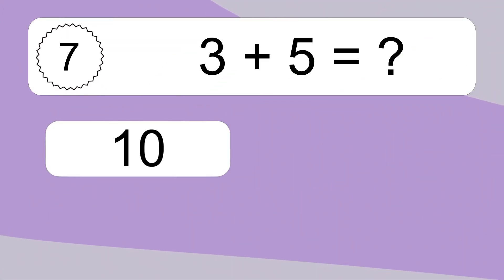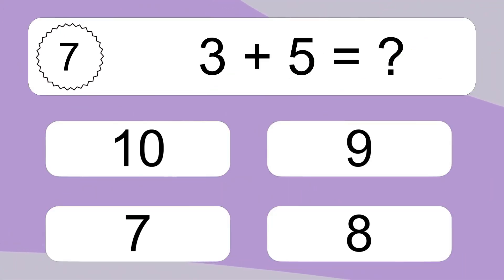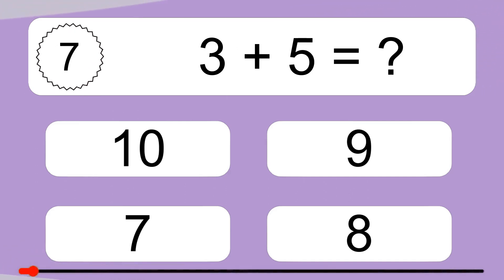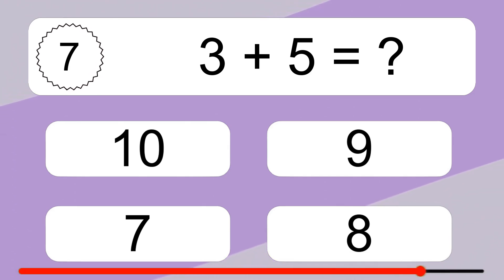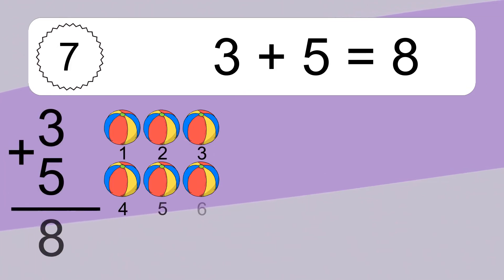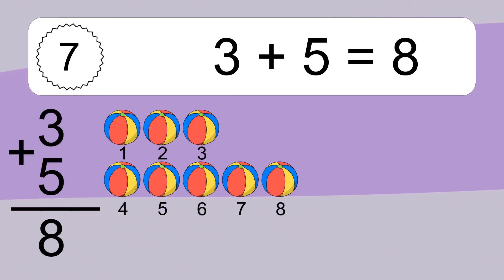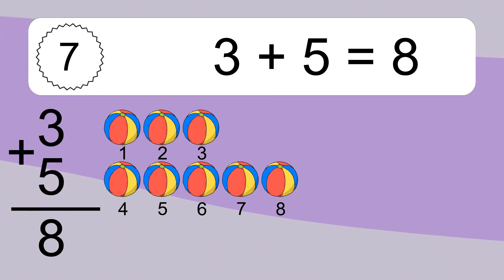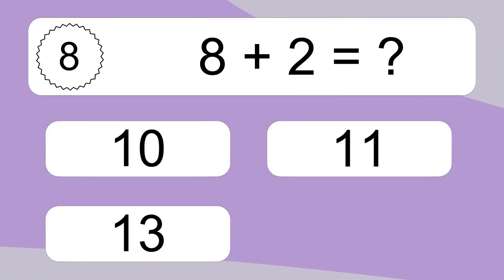3 plus 5 equals what? 3 plus 5 equals 8. Let's count it. 1, 2, 3, 4, 5, 6, 7, 8.